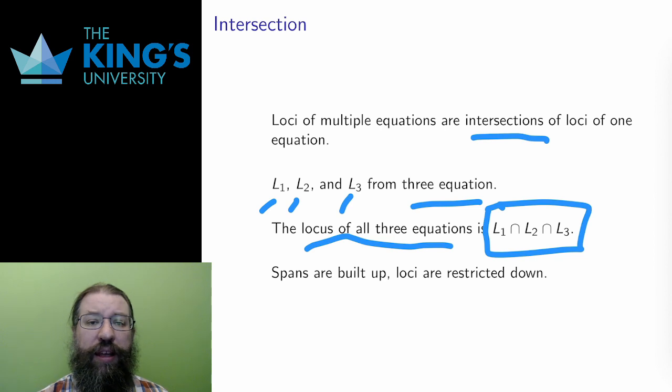Let me end with a clarification of this idea of restricting down. Spans and loci are two methods of building the geometric objects of this course, flat, unbounded objects in Rn. They go about that construction in opposite ways.